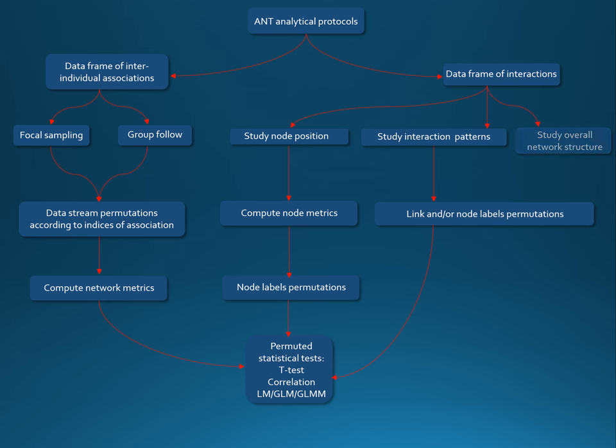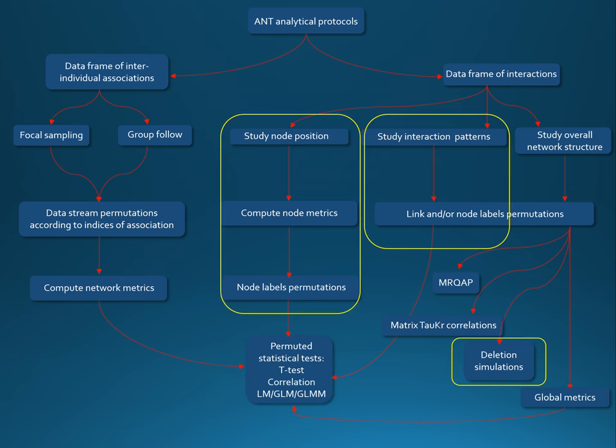Finally, you can study overall network structure by doing link permutation first. You can use matrix regression or matrix correlation, deletion simulation, or compute global network metrics and then run your statistical permutation tests. Today, due to time limitations, I will show you how we can use these three aspects in ANT.